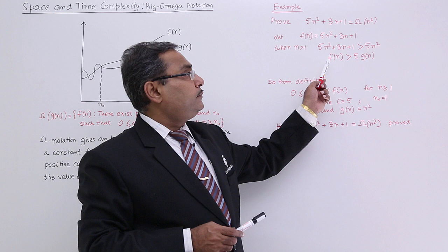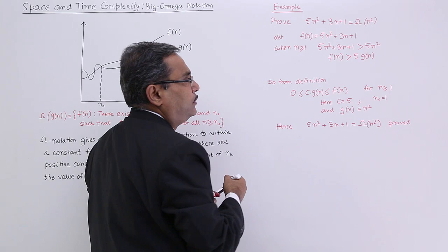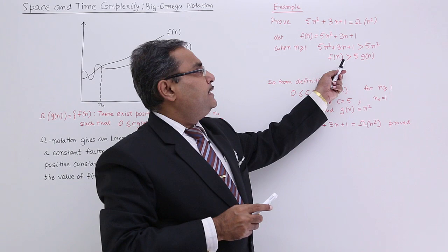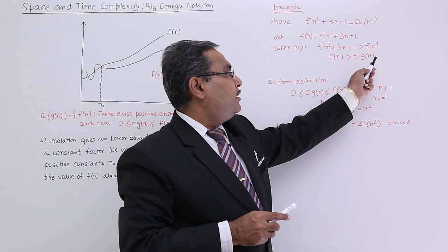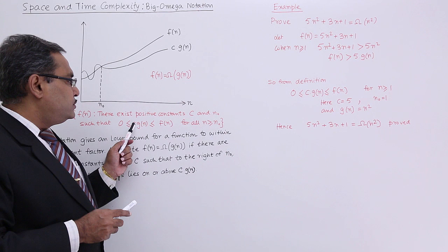What will happen? You see I can also make it when n is greater than equal to 1, there also it will work. Now you see this f of n, here f of n is greater than 5 into g of n. I am considering n² as g of n. From the definition...